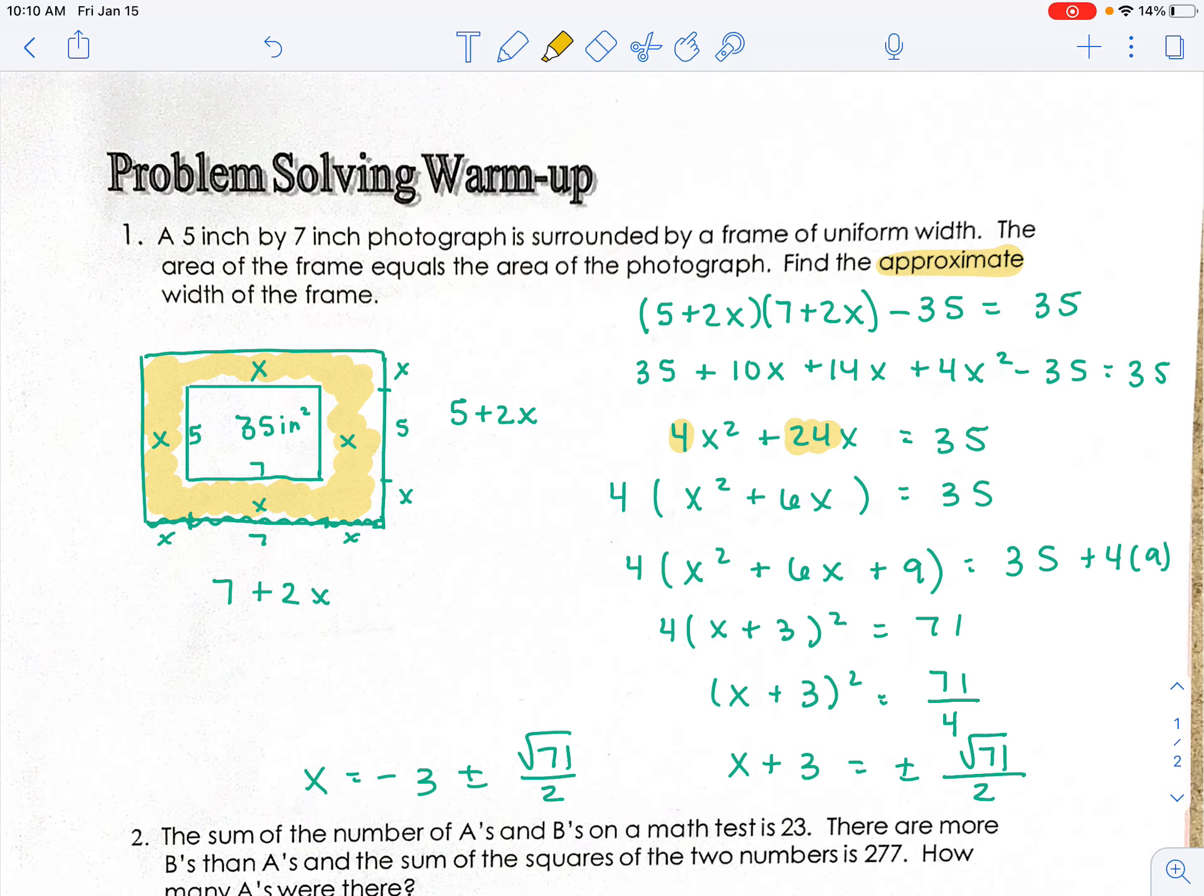Now realistically, we're going to rule out the negative 3 minus because you can't have a negative width. So in your calculators, you're going to type in negative 3 plus radical 71 divided by 2. And when you do, you get,